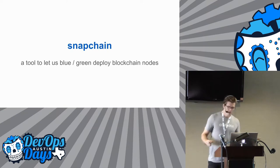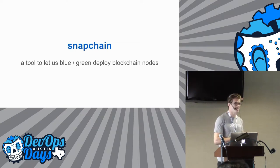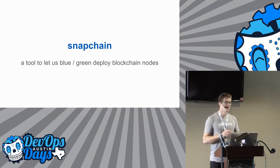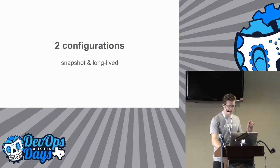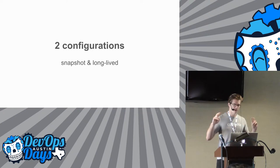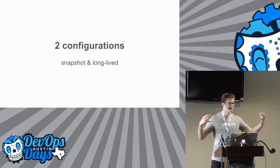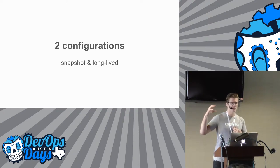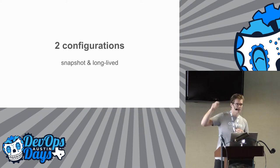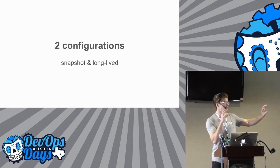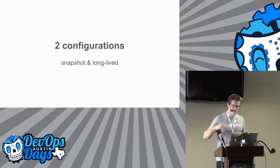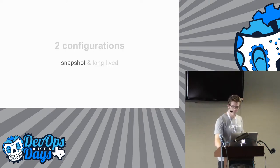So how did we actually solve this? We wrote a tool called Snapchain. What Snapchain does is basically let us blue-green deploy blockchain nodes using EBS volumes to handle state in a kind of clever way. There are two different kinds of Snapchain servers: a snapshot server and a long-lived server. The snapshot server is the server that's actually taking snapshots of the blockchain and constantly checkpointing it. The long-lived servers are the servers that are like clients for applications we use in the backend. The long-lived ones last a long time and the snapshot ones are constantly getting shut down and spun up to take a literal snapshot of the blockchain.